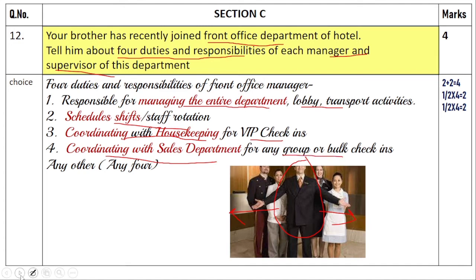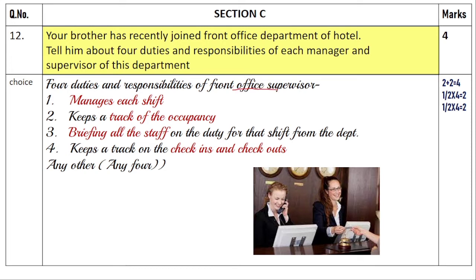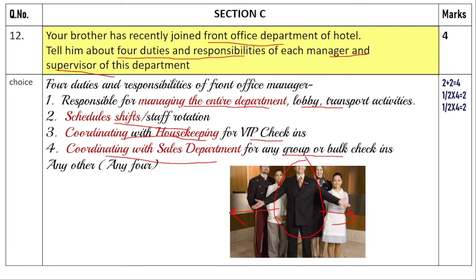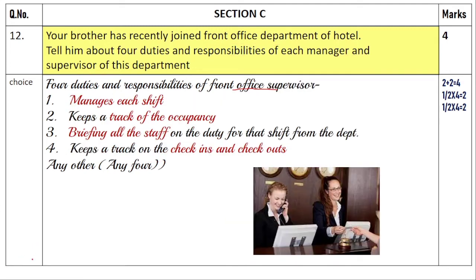The front office manager also helps with VIP check-ins, their security requirements, coordinating with the sales and finance departments to increase sales, and managing group check-ins for events like marriages, banquets, or birthdays. The front office supervisor, who is below the manager, manages each shift — keeping track of occupancy, how many rooms are occupied, giving keys, briefing staff on their duties for that particular shift, tracking check-ins and check-outs, calling the porter for transport requirements, and arranging conducted tours for guests.